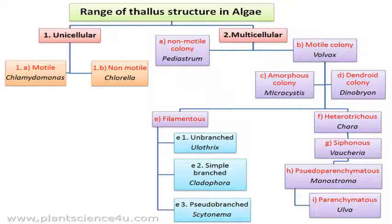This is the flowchart showing the range of thallus structures in Algae. Firstly we have unicellular, which can be two types: motile and non-motile. Motile means they will have flagella or some structure which helps in motility — example is Chlamydomonas. Non-motile means there is no flagellar structure present — example is Chlorella.